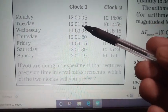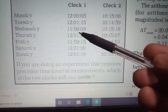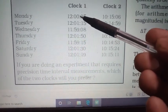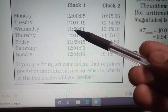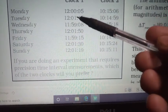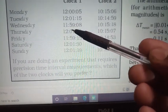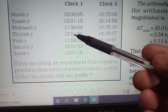These are positive errors and negative errors. Clock 2 readings are more than 12:00, so these are positive errors. Clock 1 readings are less than 12:00, so these are negative errors.